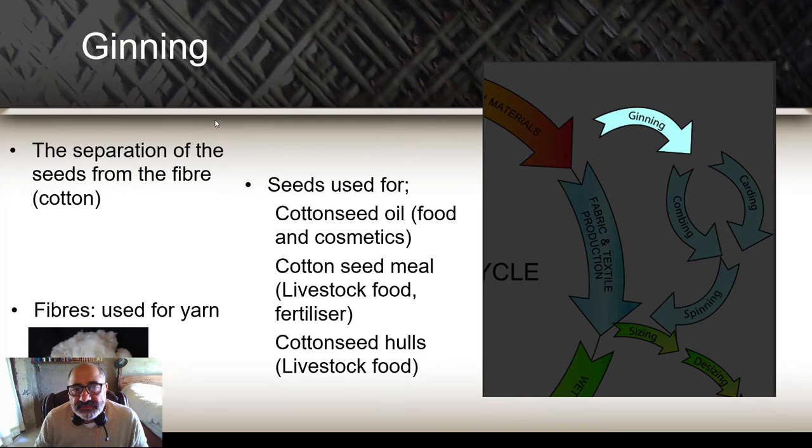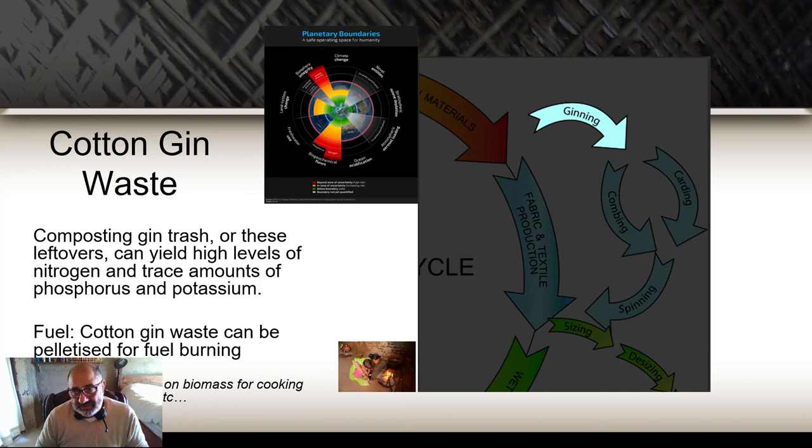So our first process is a simple process. If it were a machine, it would require electricity, and the question would be: where does that electricity come from? The cotton gin waste — also called gin trash — is another valuable product, despite the terminology suggesting otherwise. It can yield high levels of nitrogen and trace amounts of phosphorus and potassium, which combined are the components of fertilizer.